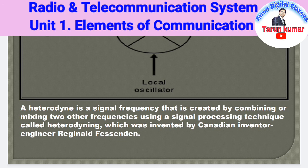Heterodyne is a signal frequency that is created by combining or mixing two other frequencies using a signal processing technique called heterodyning, which was invented by the Canadian engineer Reginald. He invented the term heterodyne and the process of how to mix or add two different frequencies to get a desired frequency.